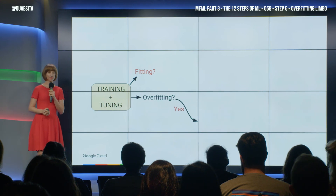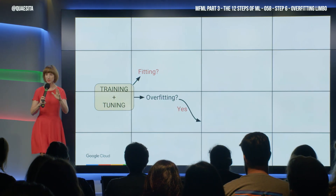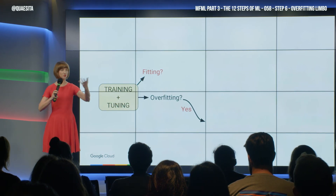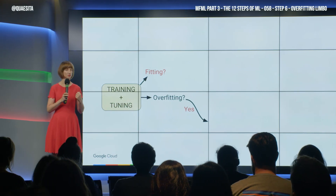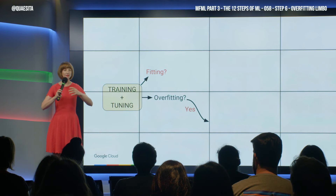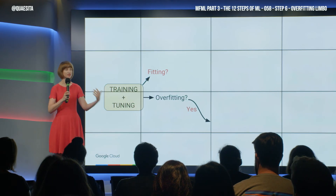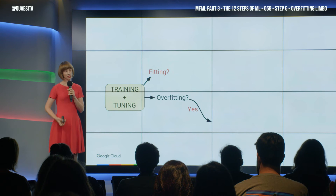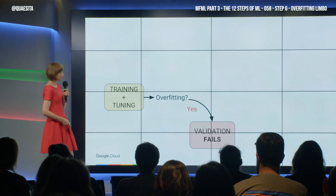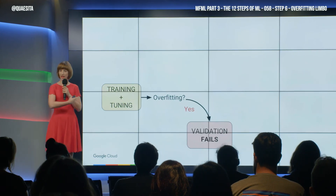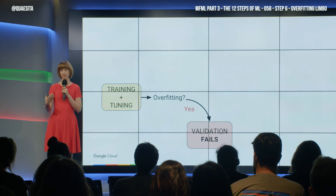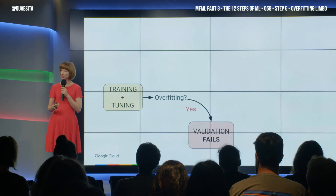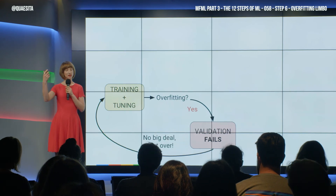If, on the other hand, we have overfitting — the worst possible thing that could happen is that we launch some horrible system that destroys everything and crashes and burns. Well, don't worry, we have a seat belt. We have protection against that. Validation will prevent that bad situation. So we go to validation, and because we have this problem, validation fails. No big deal — we were protected from launching something horrible. We could just go back and try again.